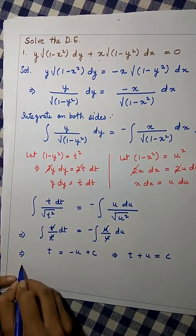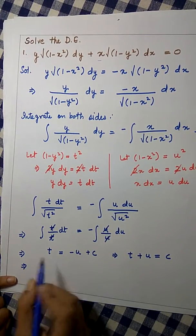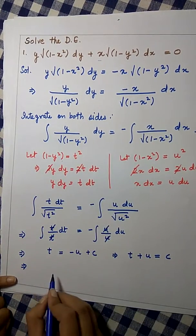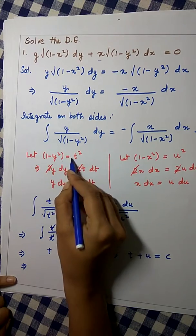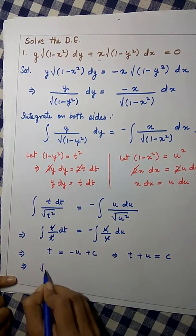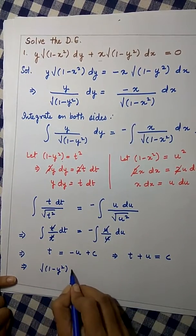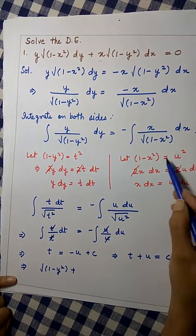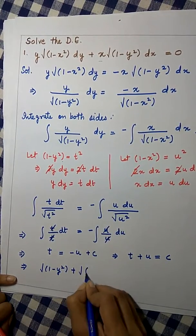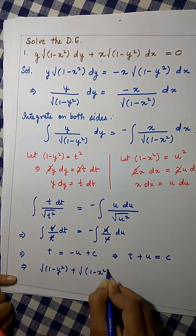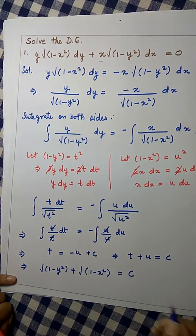Now, let us put back the values. So, we can write t as root of 1 minus y square, and since u square is equal to 1 minus x square, we can write u as root of 1 minus x square, which will be equal to c.